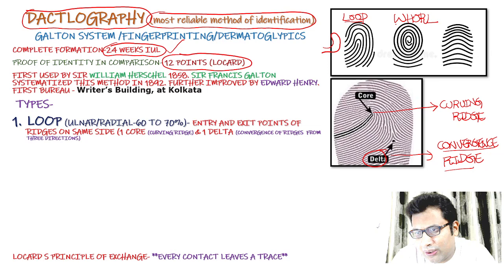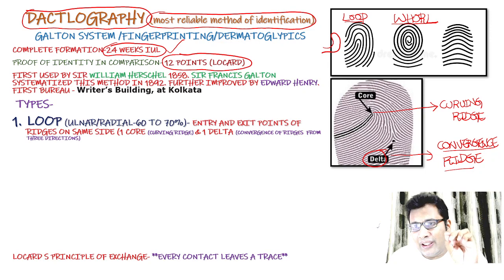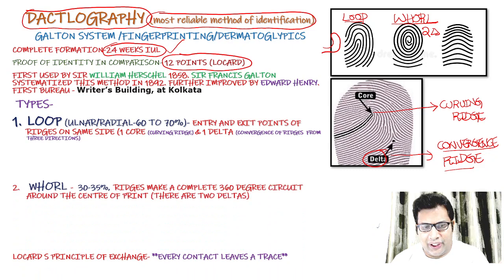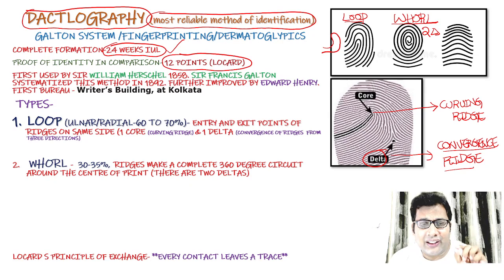The second most common type is the whorl. In the whorl, there is a complete circle formation — a 360-degree circuit around the center of the print. Remember, in case of a whorl, you will see two deltas. The whorl accounts for 30 to 35 percent of cases.